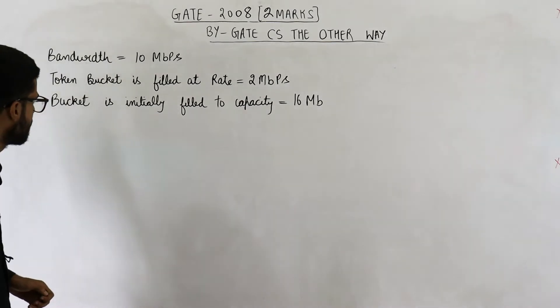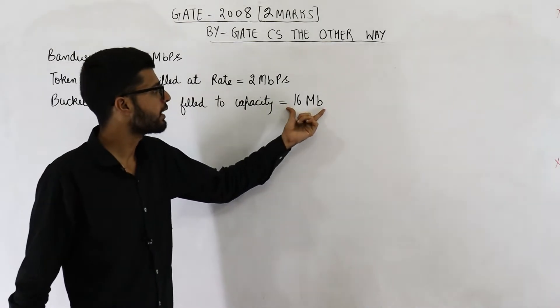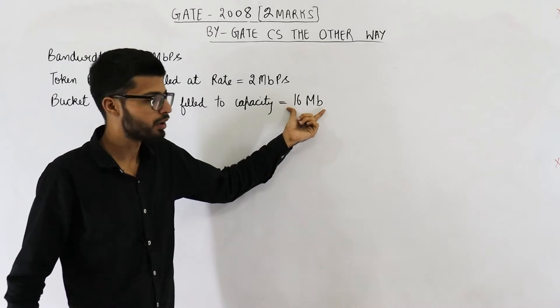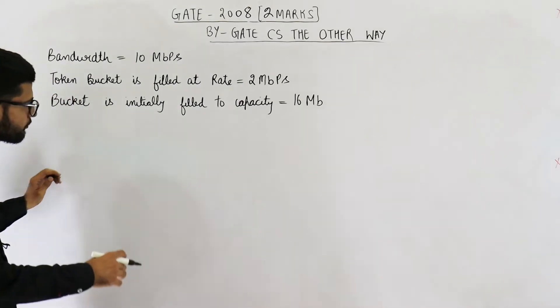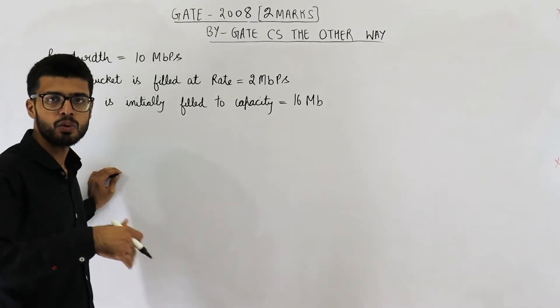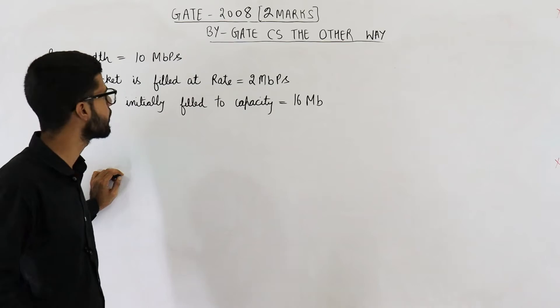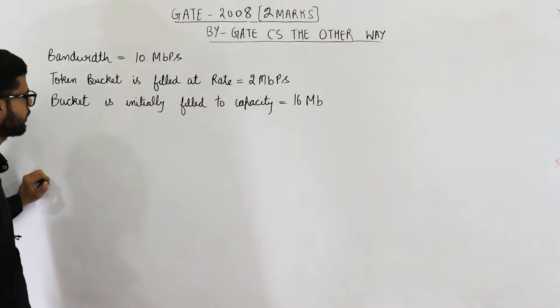Now see, if initially the bucket has 16 MB tokens, we need to find for how much time they will last. Because for that entire time, you can keep on sending data at full capacity of 10 Mbps.